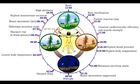What drives the circadian rhythm? Circadian rhythm is driven by the suprachiasmatic nucleus, also known as SCN, of the hypothalamus.